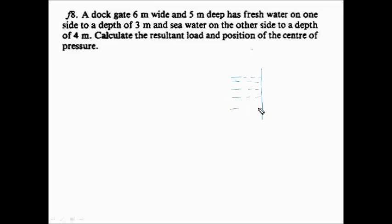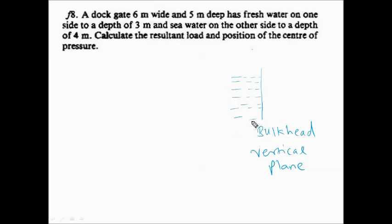Just a recall of the last class: we have seen that we have a vertical wall — like a bulkhead — and on only one side there is a liquid present. This bulkhead is a vertical plane, and on only one side of the bulkhead there is liquid, on the other side there is no liquid present.